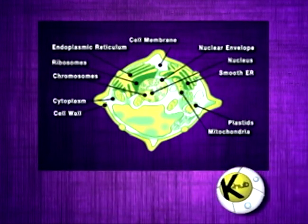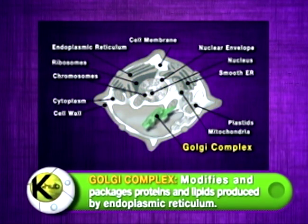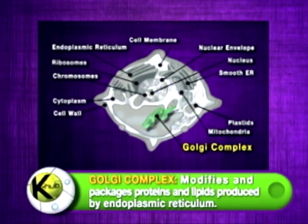The Golgi complex modifies and packages proteins and lipids produced by the endoplasmic reticulum.